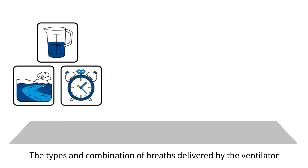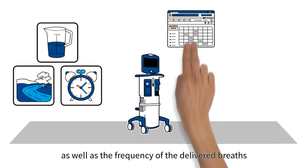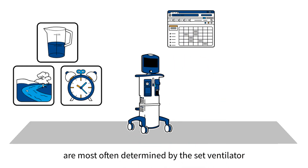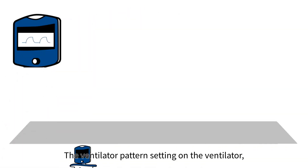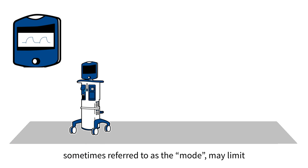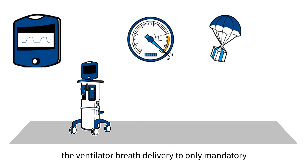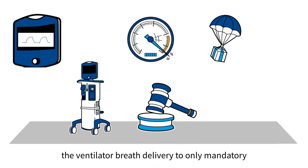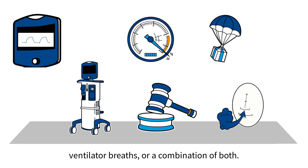The types and combination of breaths delivered by the ventilator, as well as the frequency of the delivered breaths, are most often determined by the set ventilator pattern selected by the ventilator operator. The ventilator pattern setting, sometimes referred to as the mode, may limit breath delivery to only mandatory assured breaths, only spontaneous support ventilator breaths, or a combination of both.